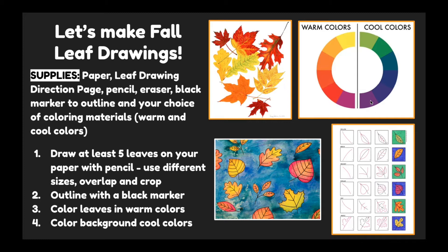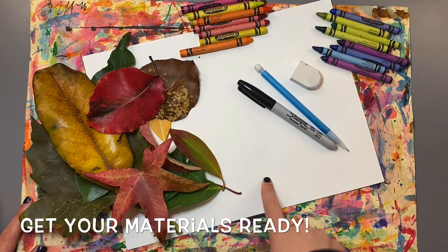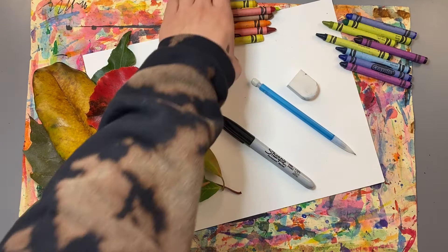First we'll draw at least five leaves on our papers with pencil, trying to use different sizes and overlap and crop our leaves. Next we'll outline them with a black marker. Then we'll color our leaves in with warm colors and color the background with cool colors. For your materials you'll need a piece of paper, a pencil, an eraser, a black marker, and coloring materials separated into warm colors and cool colors.